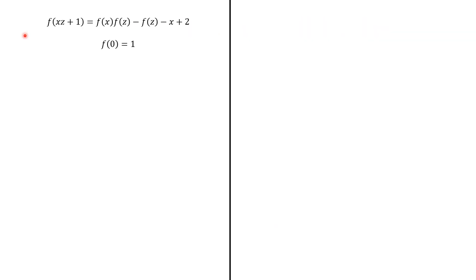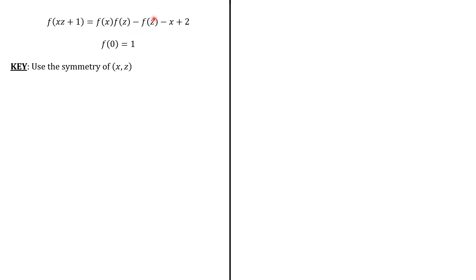We are given this functional equation. Sometimes the key is to focus on the symmetry of the problem. Here, we're going to consider the couple (x, z). We see that f(xz) + 1 is symmetric with x and z, and f(x) multiplied by f(z) is symmetric with x and z. But minus f(z) minus x is no longer symmetric with x and z. So, this could be the key to solve the problem.